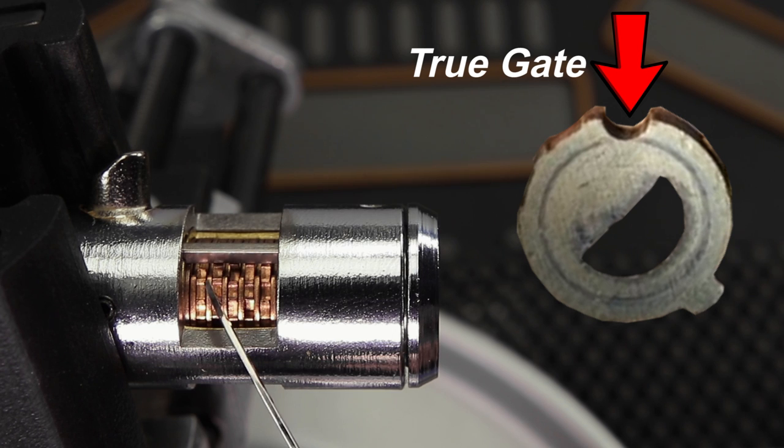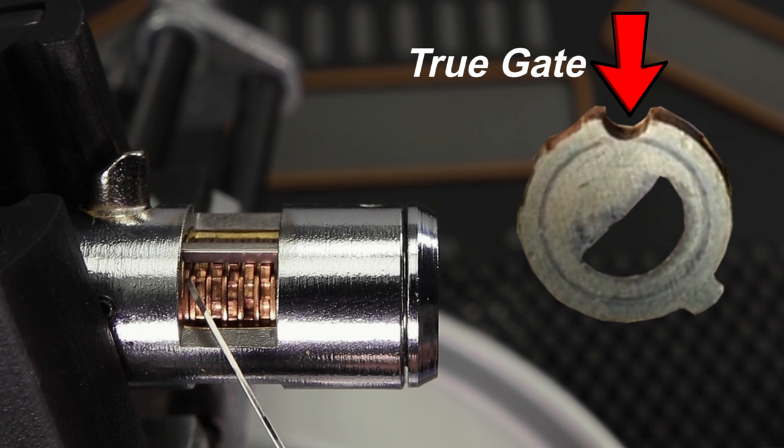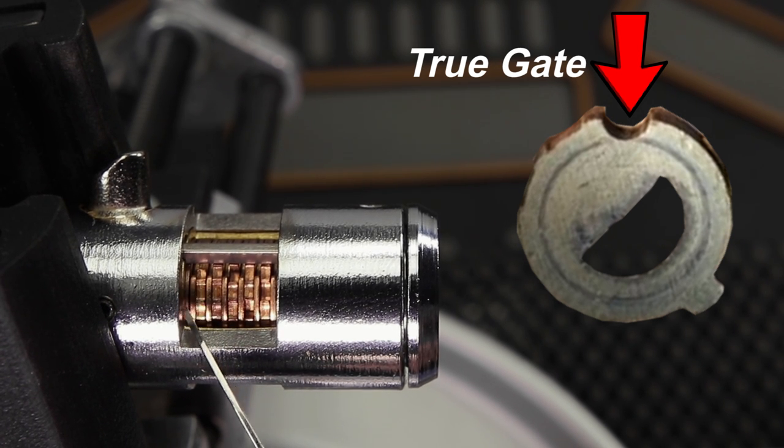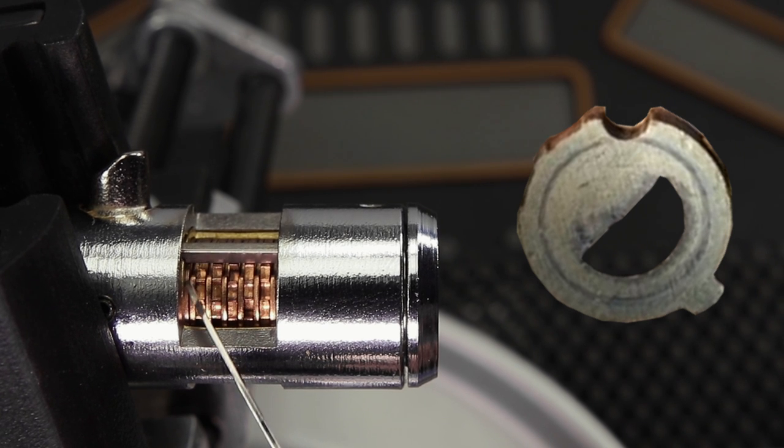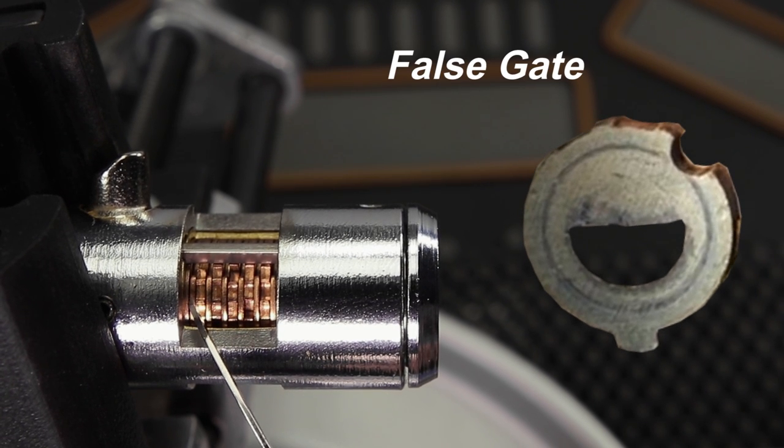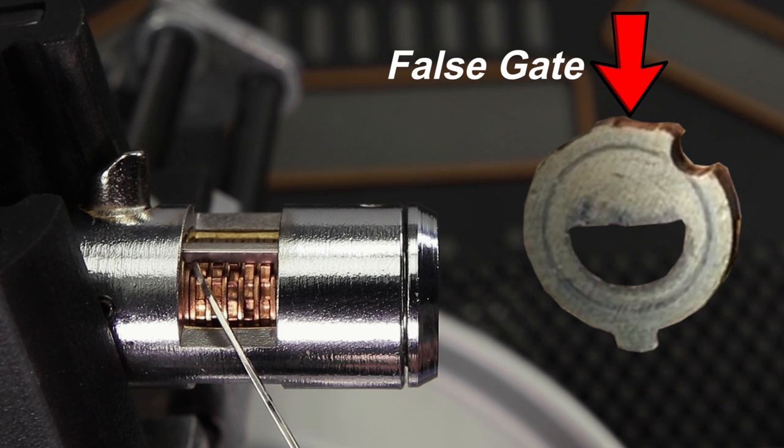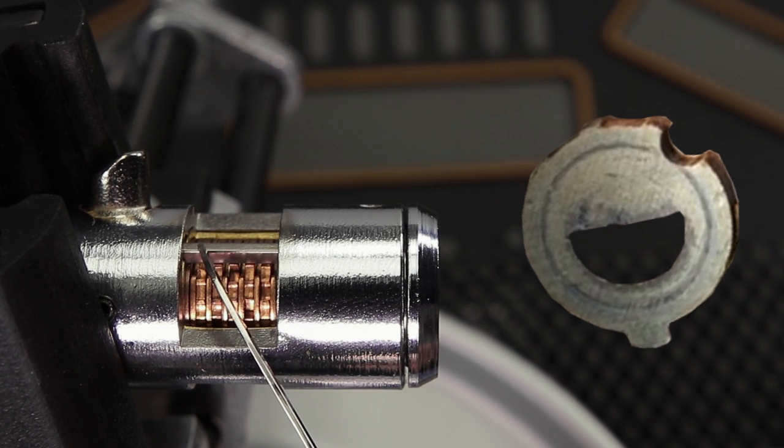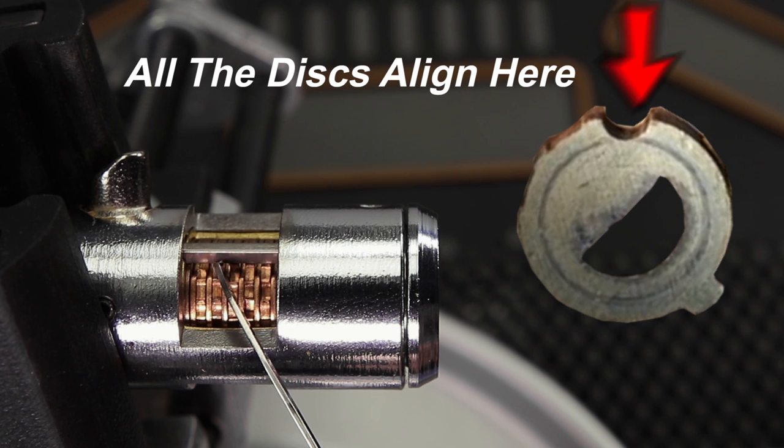On each disc there's a cutout which is called its true gate. On some of the more expensive locks you have a true gate and a shallower false gate. Once all of your true gates are aligned it makes a channel going across. The sidebar falls right into that.